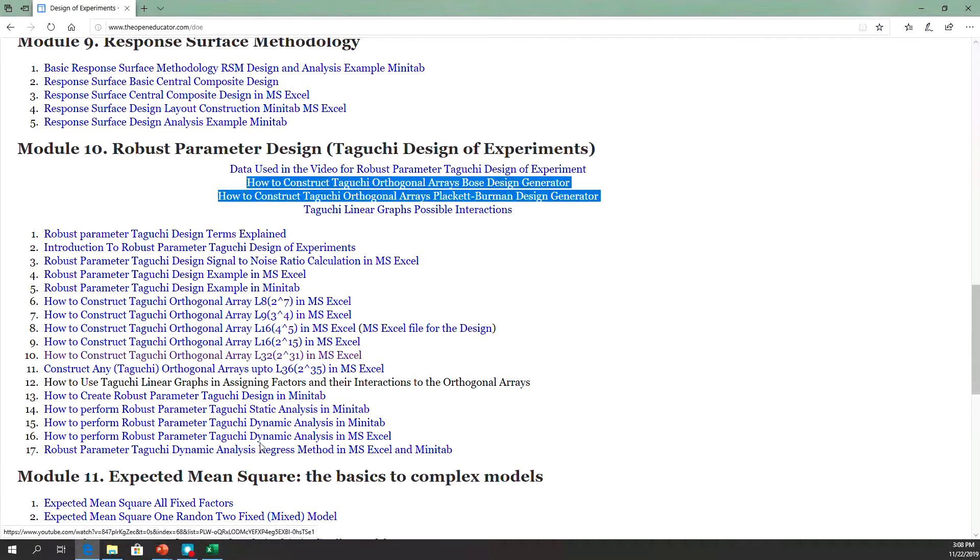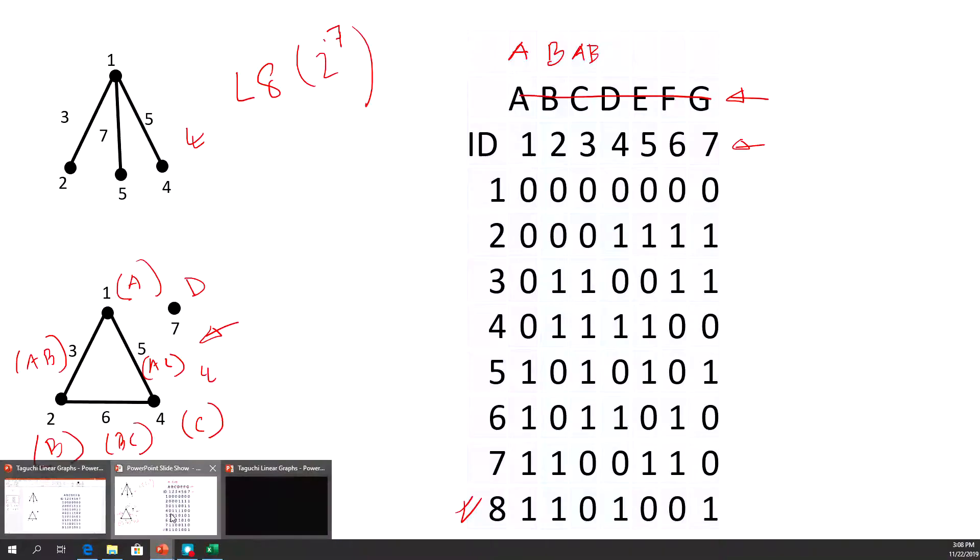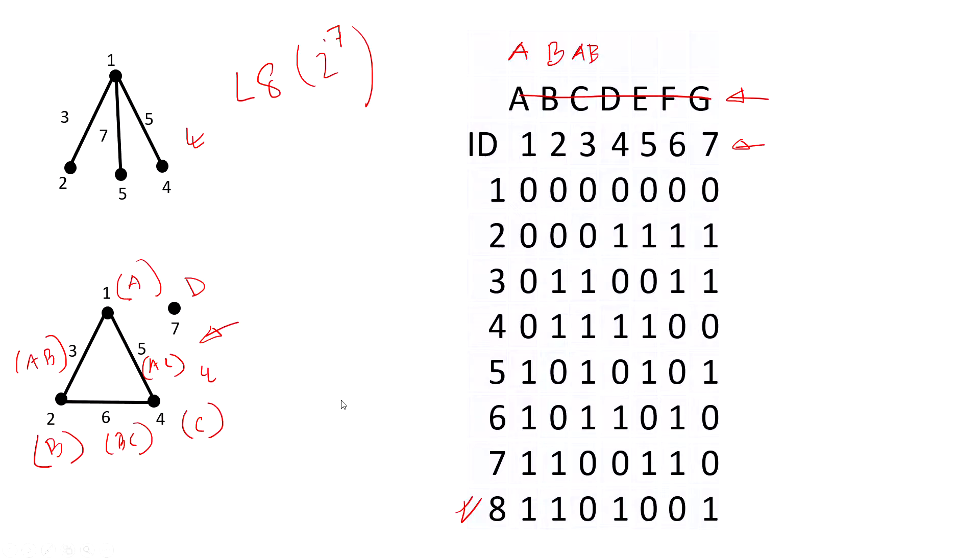You can see these two generators I've used to create all this Taguchi design. In this video, I'll talk about how to assign these different designs and visualize them through the linear graphs. Then in column four, we assign variable C, and column five is the interaction between A and C.